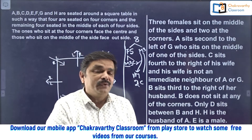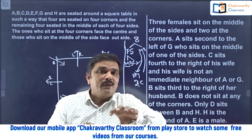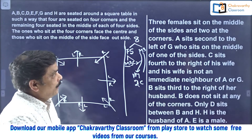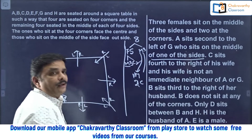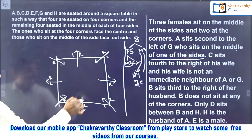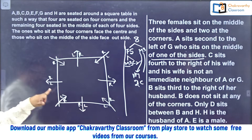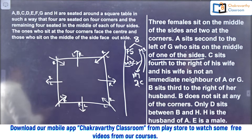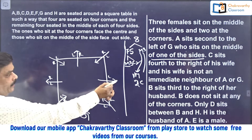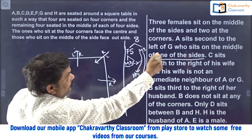Next: 'A sits second to the left of G, who sits on the middle of one of the sides.' A's place depends on G's position. Without fixing G's face direction, I cannot go for A's place. G should be on the middle of one of the sides — there are 4 middles, and wherever you want to keep G out of these 4 places is up to your convenience. So I am taking G here. A's place is second to the left of G.